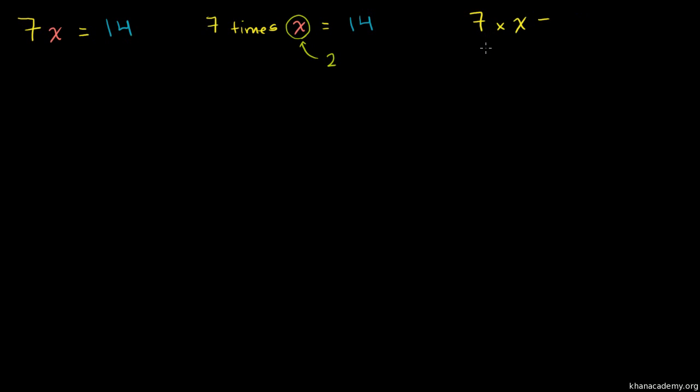You might use something like this. You might use a dot to represent multiplication. So you might have 7 times x is equal to 14. But this is still a little unusual. If you have something multiplying by a variable, you'll just write 7x. That literally means 7 times x.